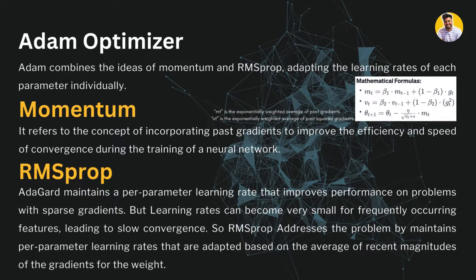Momentum refers to the concept of incorporating past gradients to improve the efficiency and speed of convergence during neural network training. By incorporating past history, the model better understands current and future data — that is the concept of momentum. In the Adam formula, the values m_t and v_t are the moving averages: m_t is the exponentially weighted average of past gradients, and v_t is the exponentially weighted average of past squared gradients.